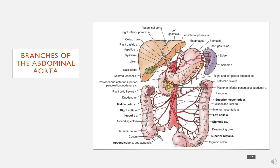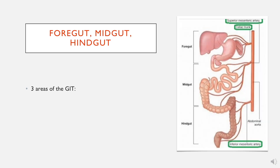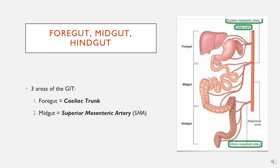The branches of the abdominal aorta are usually presented in a textbook looking something like this — a bit scary and confusing — but they can be simplified. If you think of the gastrointestinal tract as the base of the abdominal blood supply, there are three areas: the foregut, supplied by the celiac trunk; the midgut, supplied by the superior mesenteric artery; and the hindgut, supplied by the inferior mesenteric artery. These are the three main arteries you need to know, and remembering that they supply the foregut, midgut, and hindgut is a good base to go on.